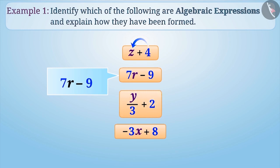y by 3 plus 2 is formed by dividing y by 3 and then adding 2 to the quotient. Minus 3x plus 8 is formed by multiplying variable x by minus 3 and then adding 8 to the product.